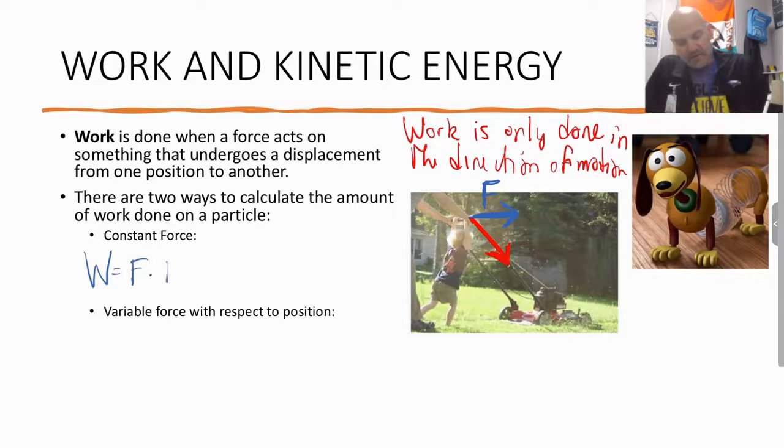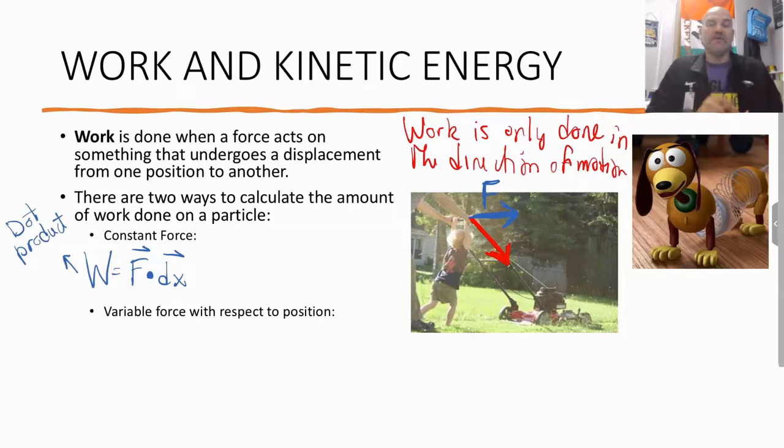The way that we calculated that was work equals, now we're going to use a little bit of calculus here. So this is a dot product, not multiply, but a dot product. A dot product is also known as a scalar product, which is when you multiply two vectors and you get a scalar quantity in return.